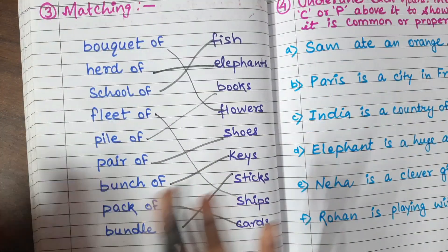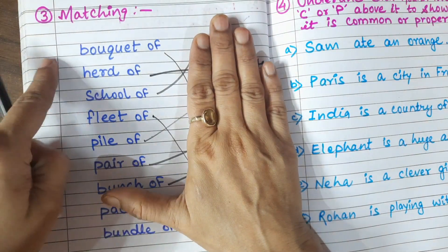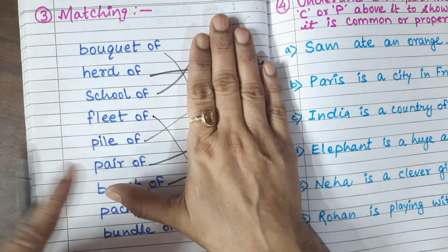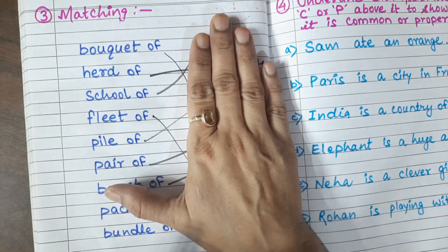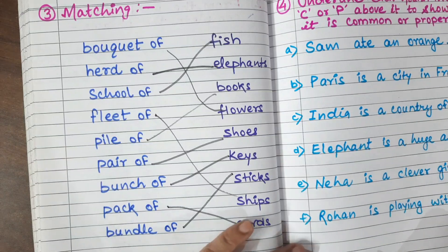You can also do this in fill-in-the-blank form: a bouquet of dash, a herd of dash, a school of dash. Remember to write both of those words yourself.